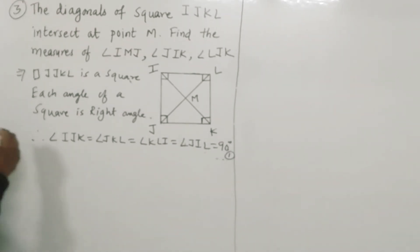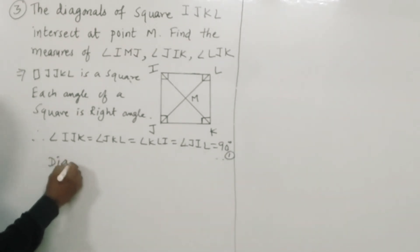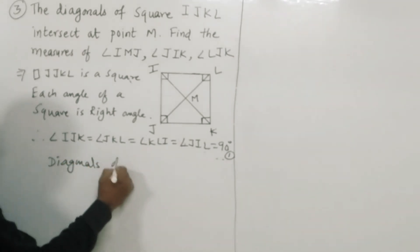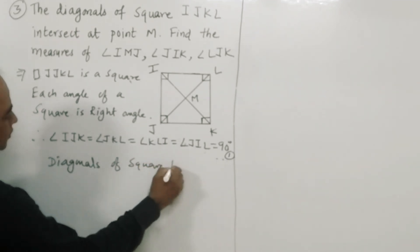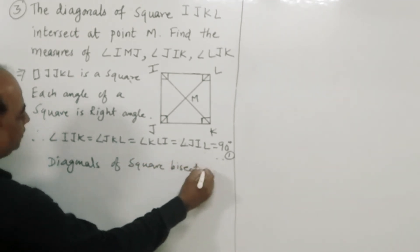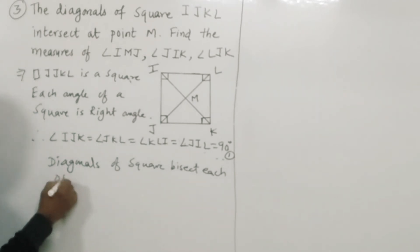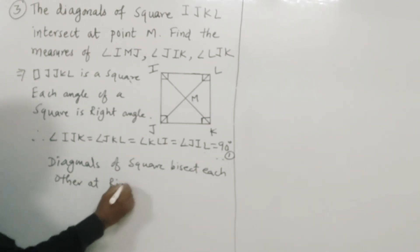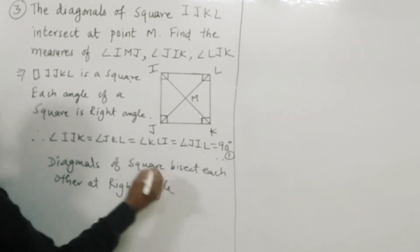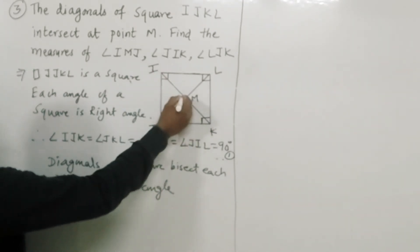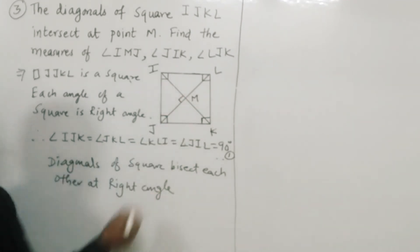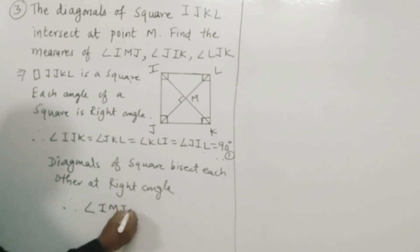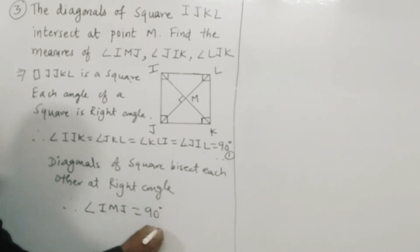By property, diagonals of a square bisect each other at right angle. Therefore angle IMJ is equal to 90 degrees.